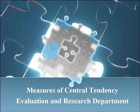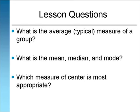In this lesson we will define three measures of central tendency, commonly referred to as averages. We will answer three questions in this lesson: What is the average typical measure of a group? What is the mean, median, and mode? Which measure of center is most appropriate?